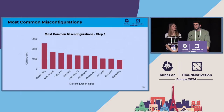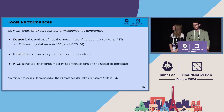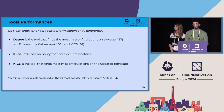For misconfigurations, these are the ten most common we found in the dataset of charts from Artifact Hub. Dangerous cluster roles, missing memory limits, and using the default namespace are the three most common. In terms of tools, the seven tools perform significantly differently. Datree was the one that found most misconfigurations on average. Kube-linter has no policy that breaks any functionality. And Kics is the one that found most remaining misconfigurations — meaning it has the most unique policies and found many misconfigurations that other tools could not detect.